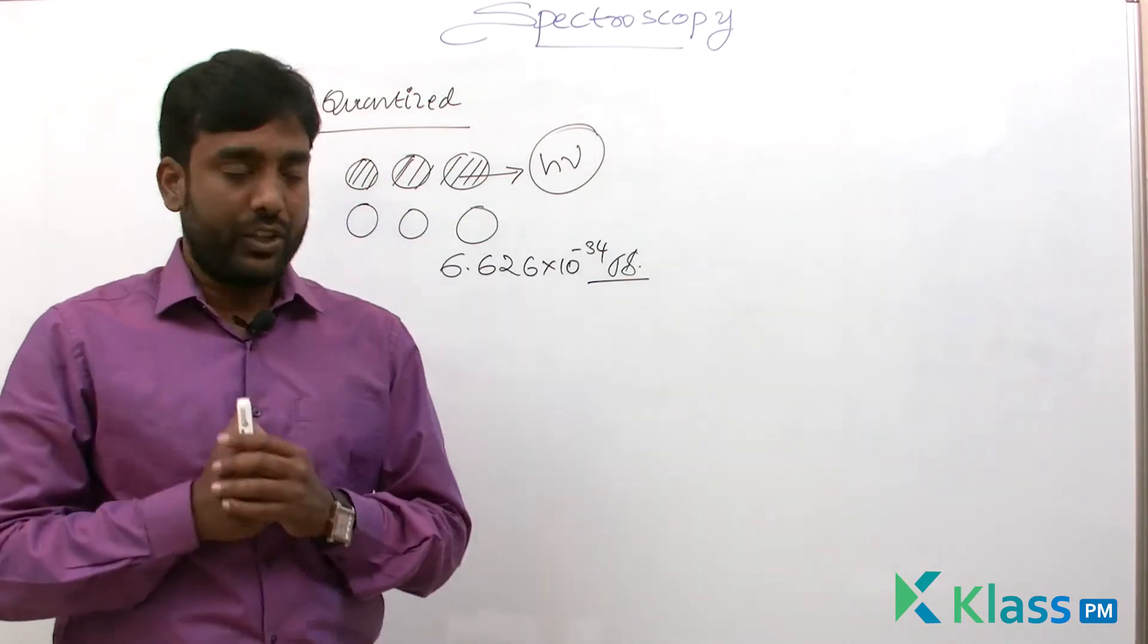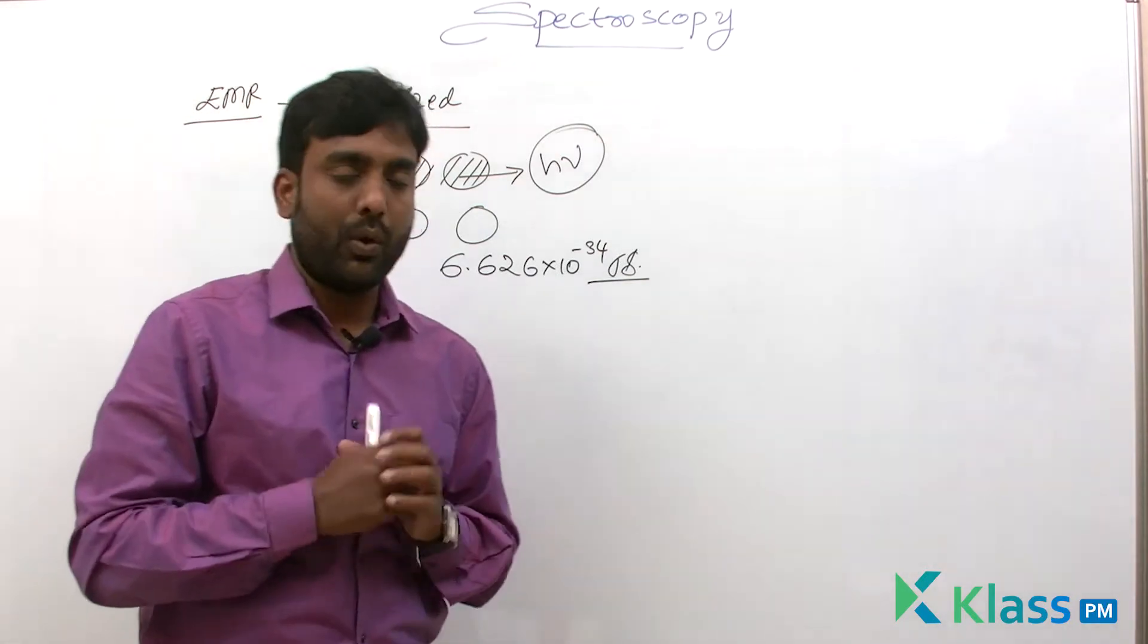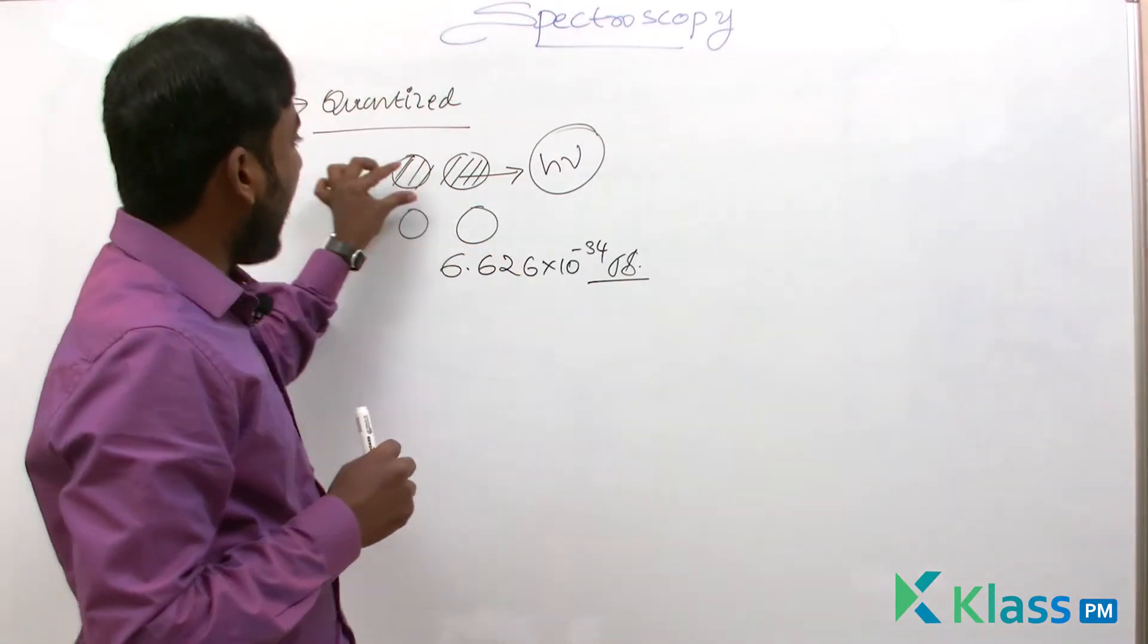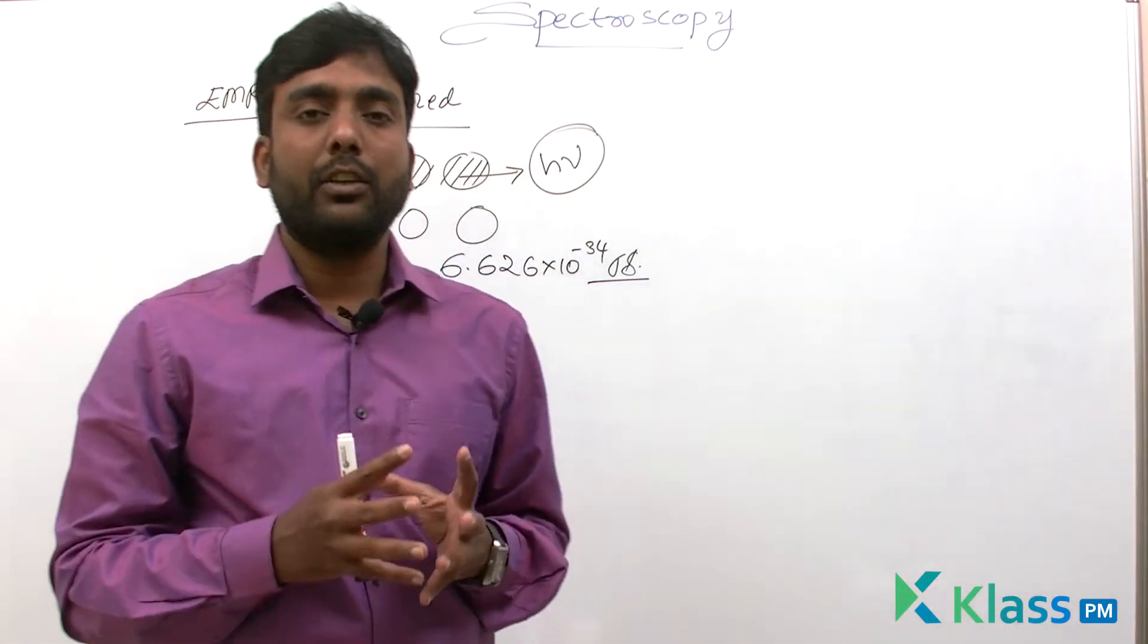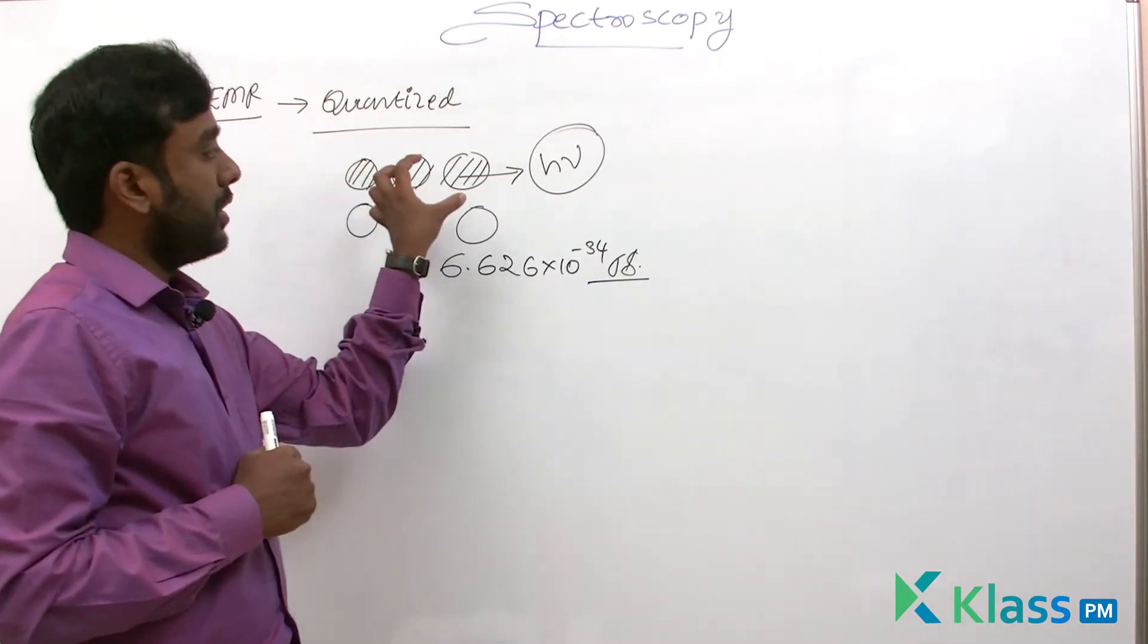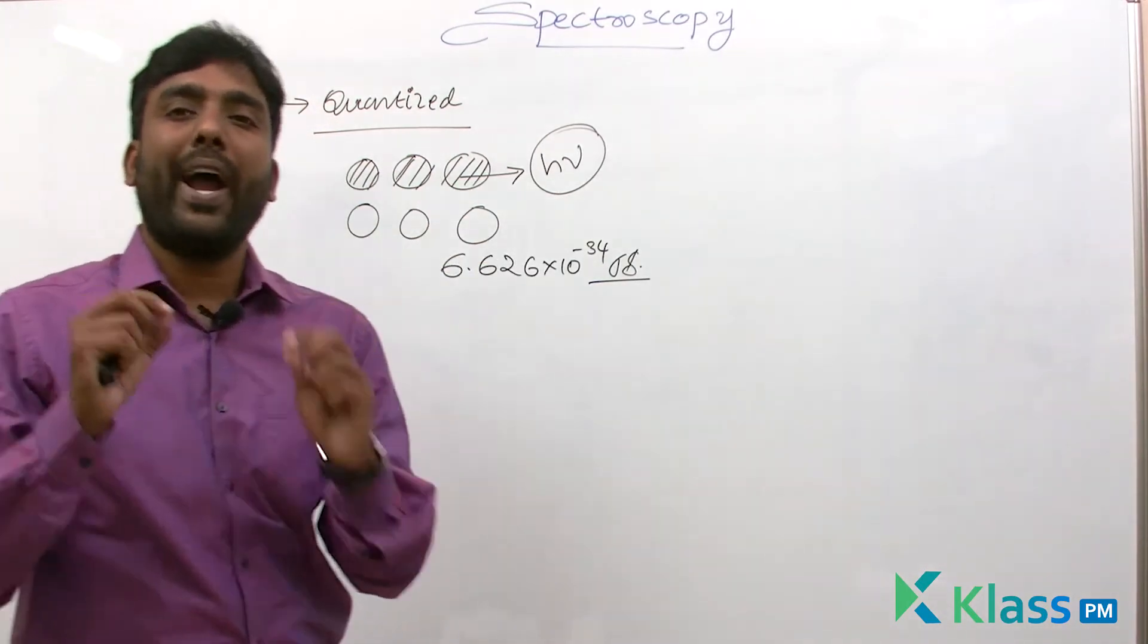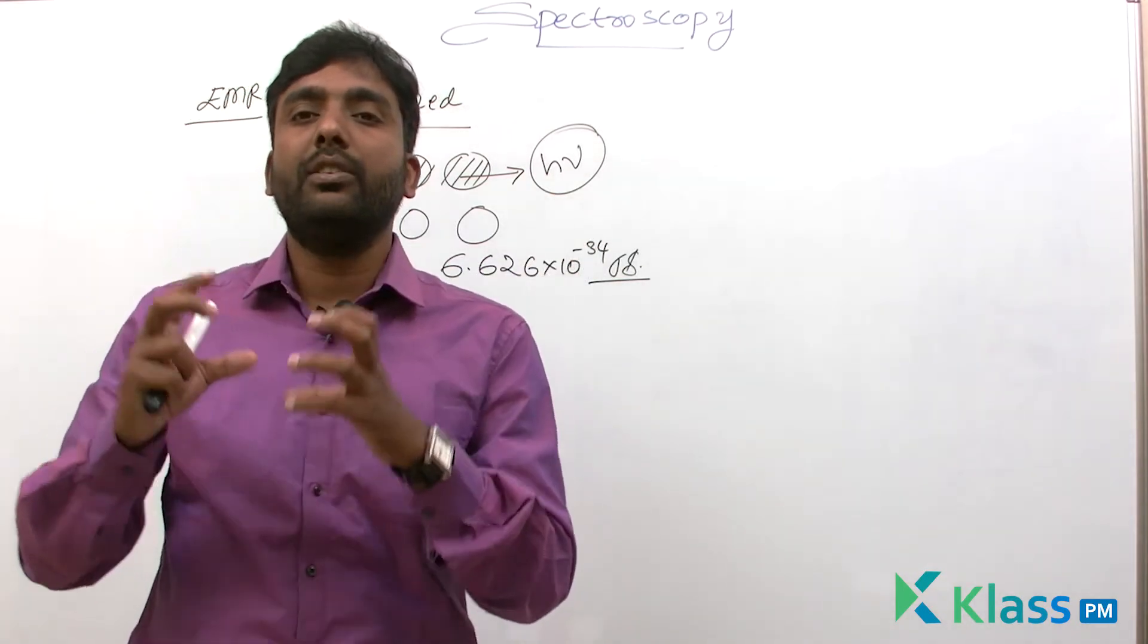This packet is called quanta, which is why this theory is also called quantum theory or Max Planck quantum theory. Every packet has energy equal to H nu, where nu is the frequency of the radiation we are considering.